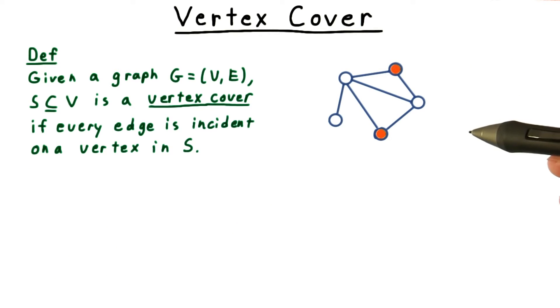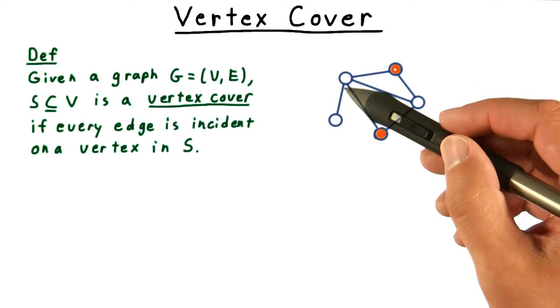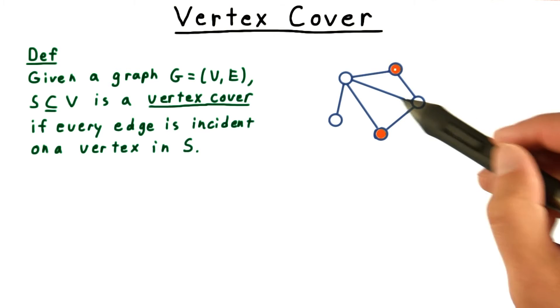To illustrate, consider this graph here. The two shaded vertices do not form a vertex cover. We haven't covered this edge here, or this one here.